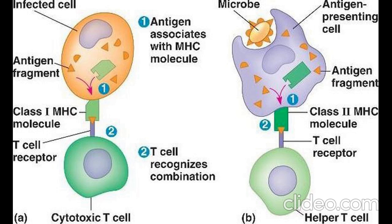There are two types of MHC molecules, classified as MHC class 1 and MHC class 2. MHC class 1 molecules are found on the surface of all nucleated cells and present peptides derived from inside the cell to CD8+ T-cells. They play a role in recognizing and responding to intracellular pathogens such as viruses and some bacteria.